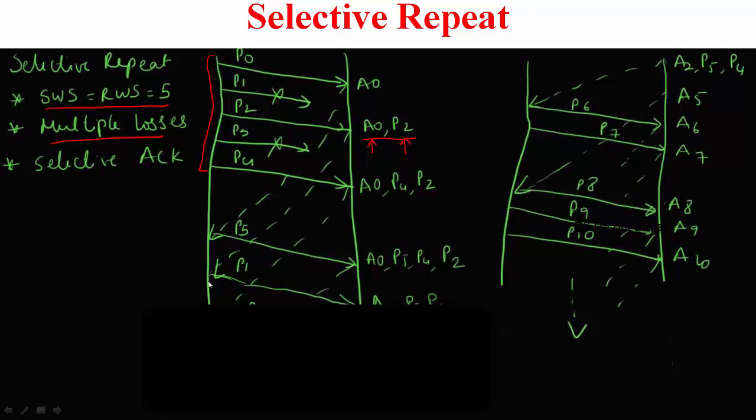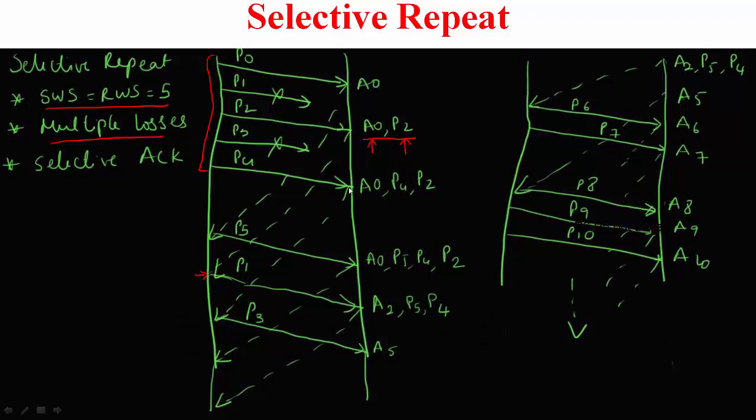Now in response to this ACK here, the sender has figured out that there's a hole in P1. In other words, P1 did not reach, thereby it retransmitted P1. And again in response to this ACK here, the sender figured out that P3 was lost and thereby it retransmitted P3. Now when P5 came, because you send the selective acknowledgement, the ACKs take these forms in response to P5, P1, and P3.